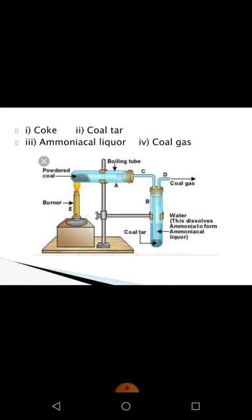This image shows the apparatus for destructive distillation of coal. It uses a boiling tube containing powdered coal, sealed with a cork to make it airtight — because the heating is done in the absence of air.